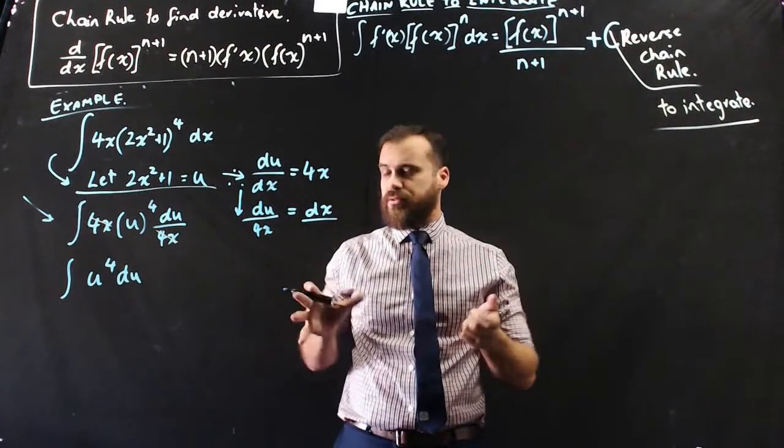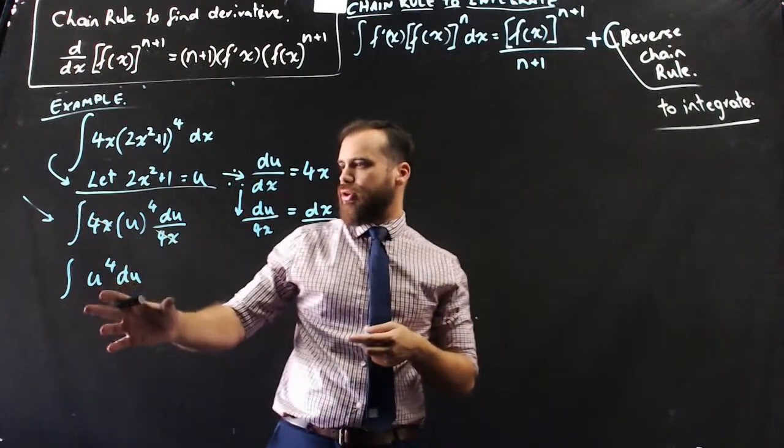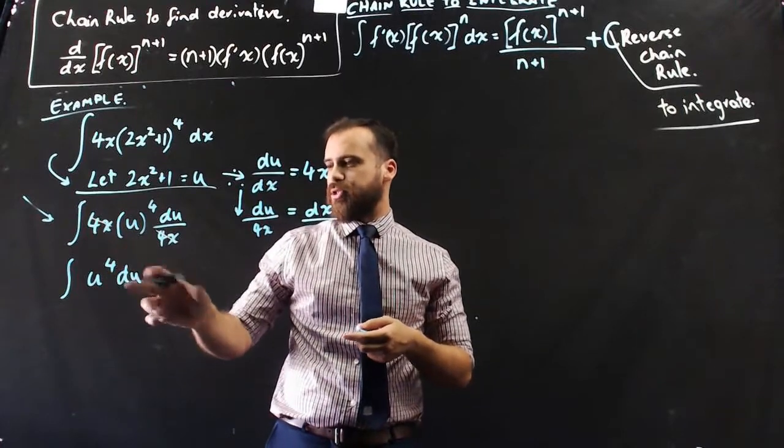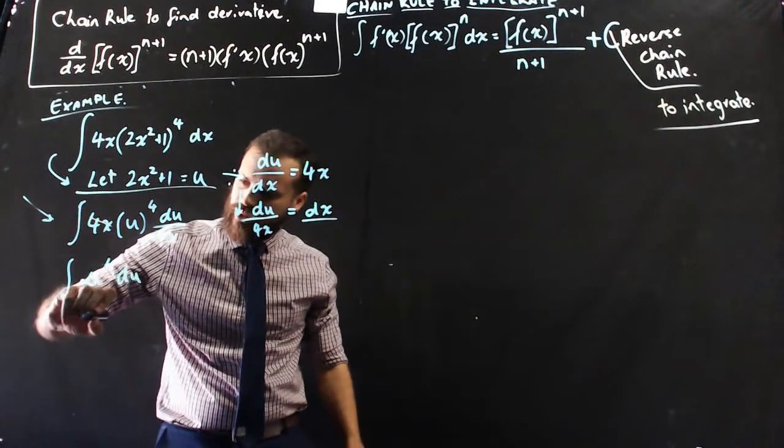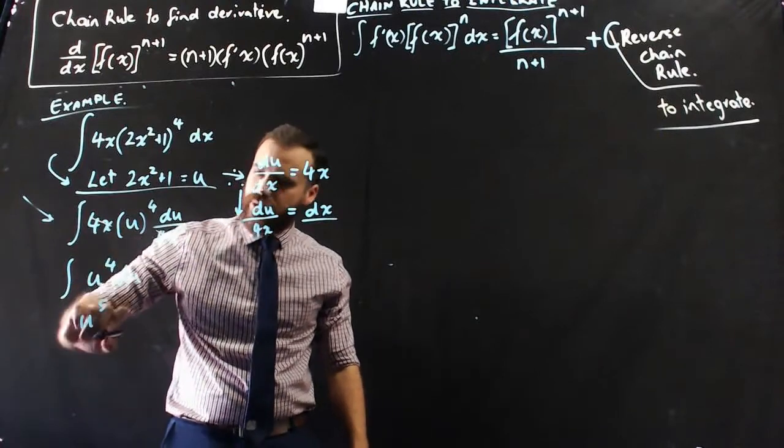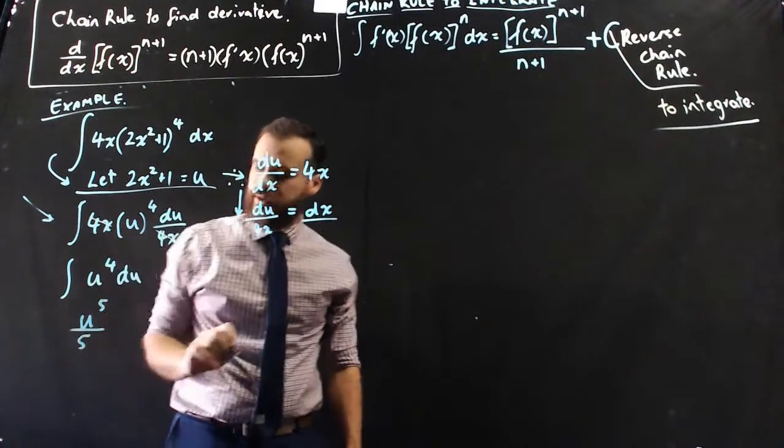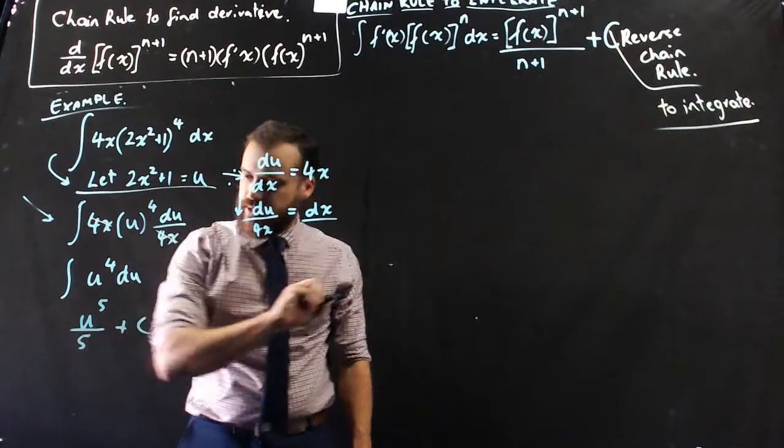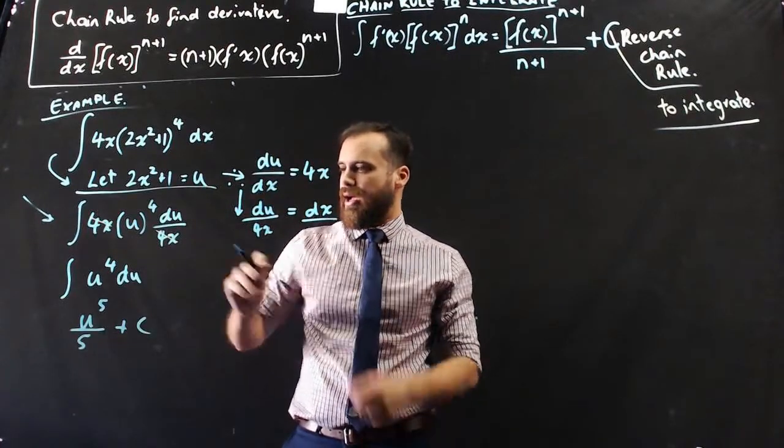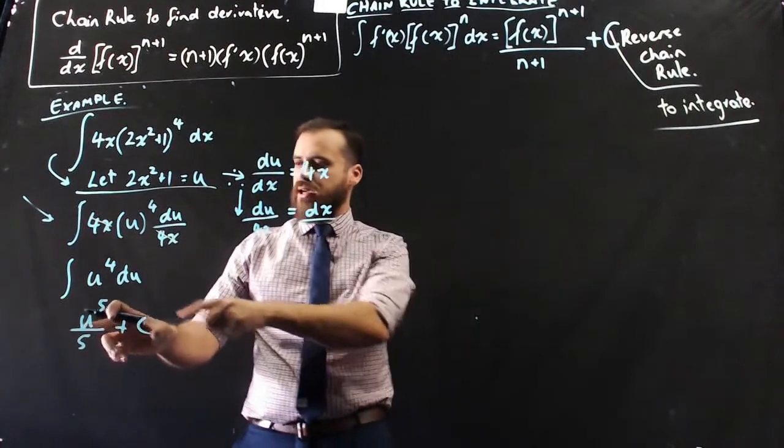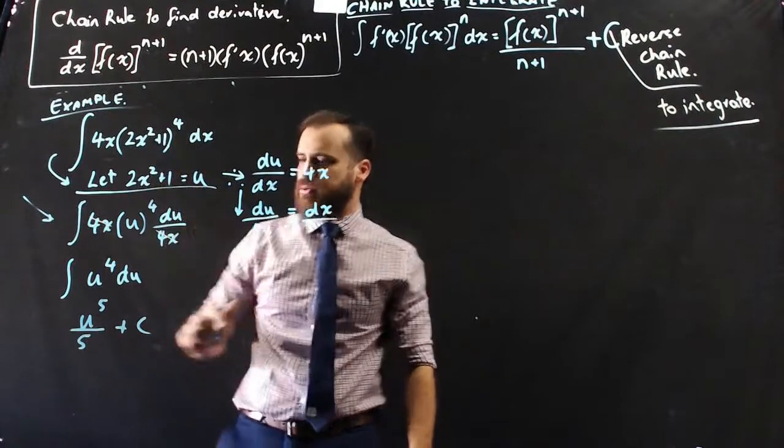So, it's really straightforward from here that integral of u to the 4 with respect to u is simply u to the 5, so 4 plus 1 over 5 plus c. And then, we can say, okay, but u isn't u. u is 2x squared plus 1.